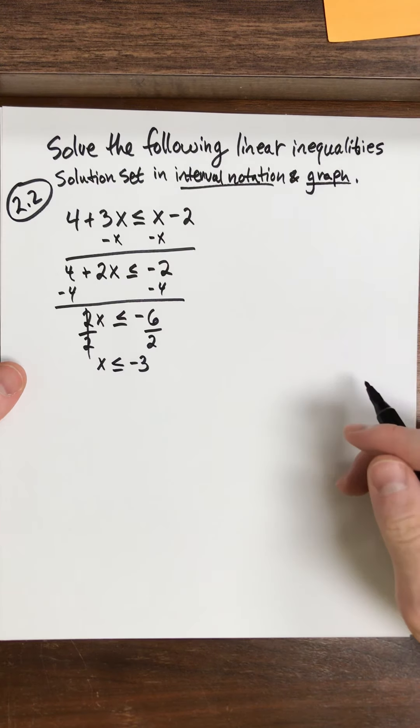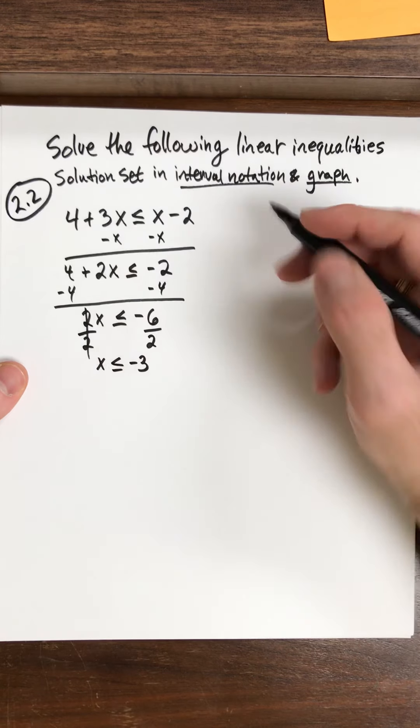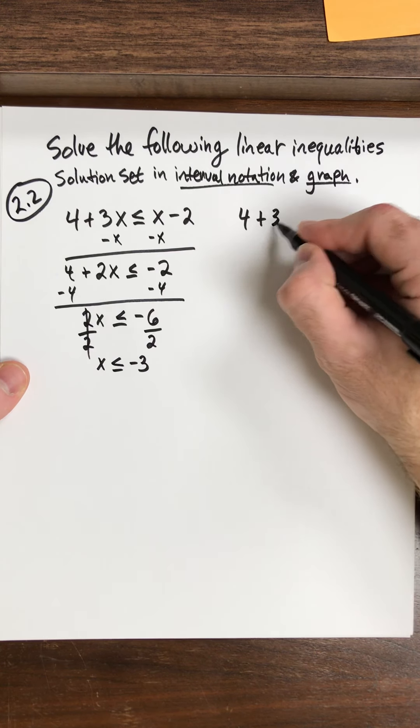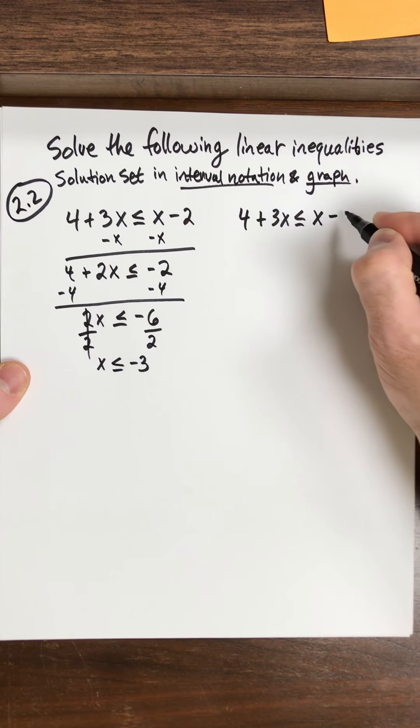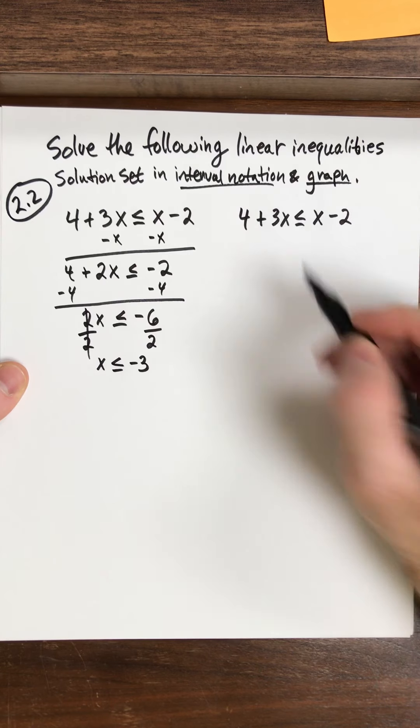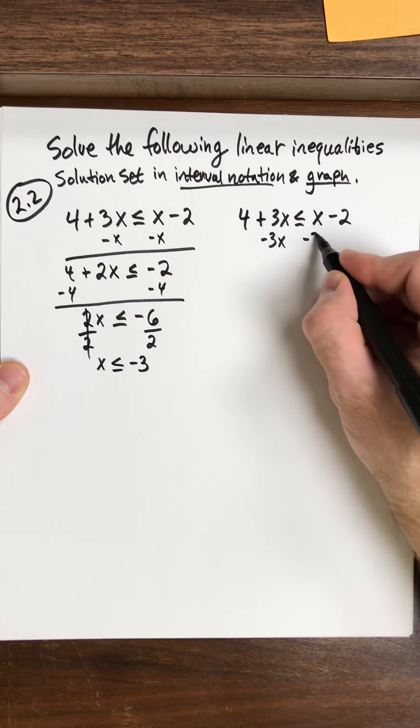Okay, so what do I mean about flipping the inequality? So let's just pretend, say we work this problem another way. 4 plus 3x is less than or equal to x minus 2. So instead of moving the x over, let's try moving this 3x over. So the opposite is to subtract 3x.